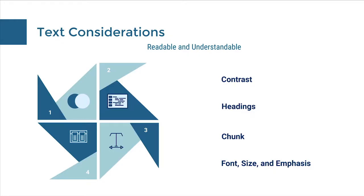Let's start with some text considerations. The main goal here is readable and understandable. For contrast, we want to make sure we're using a high contrast font — dark on light or light on dark. For headings, in Word, Google Docs, or our LMS, we want to make sure we're using the headings drop-downs. This creates nice document structure but also makes it easier for a person utilizing a screen reader to tab through and find what they're looking for. Chunking text into smaller pieces makes readability better for people with and without reading disabilities. We also want to take into consideration font, size, and emphasis.